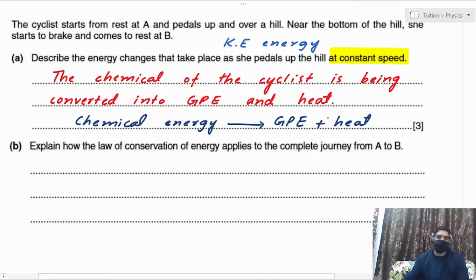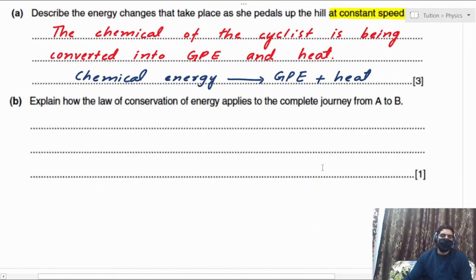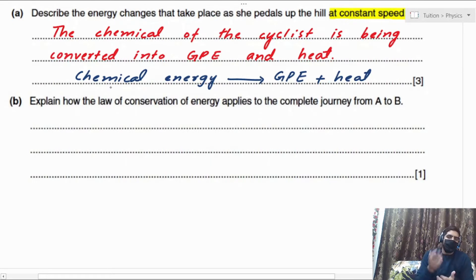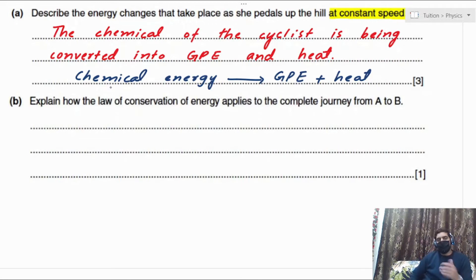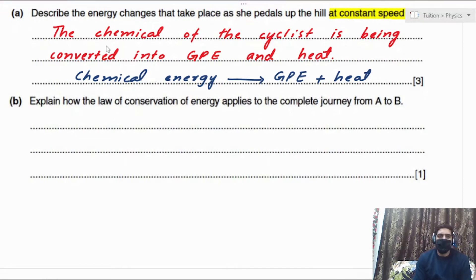The next part asks to explain how the law of conservation of energy applies to the complete journey from A to B. You cannot just state the law — you must explain how it applies in this specific case. The law of conservation of energy states that the total energy of a system is conserved, meaning it does not change.